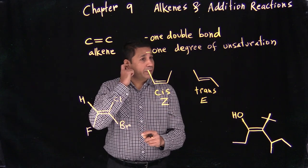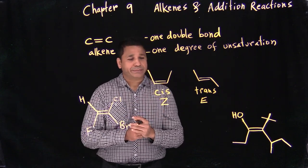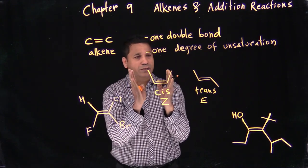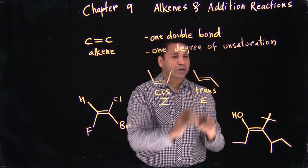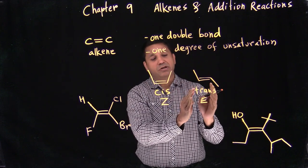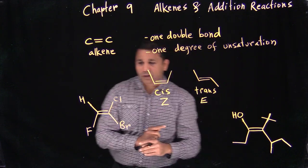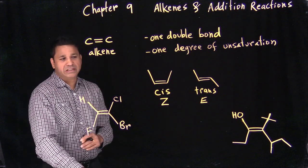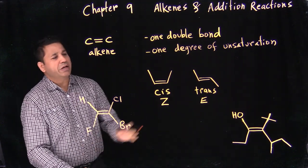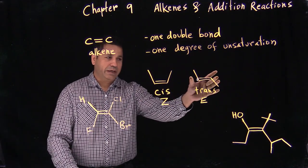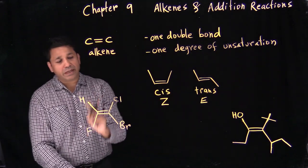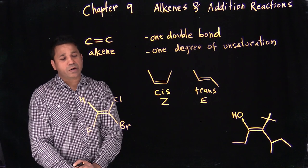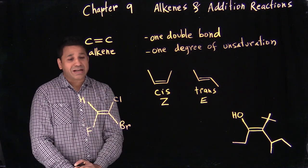Let's go through a couple of examples of how to find cis and trans. In simple examples it's easy to see — cis means together, trans means opposite. But in complex examples, it's harder, so we have to follow a process.